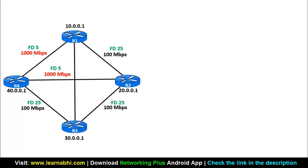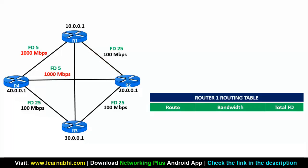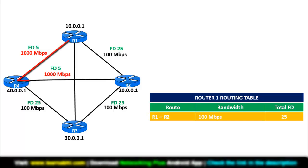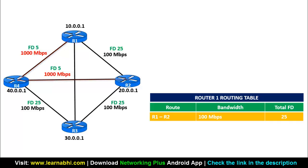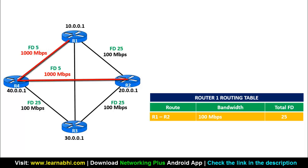The first possible route is Route 1, where Router 1 is directly connected to Router 2 with a link speed of 100 Mbps. The feasible distance for a 100 Mbps link is 25, so the feasible distance of Route 1 is 25. In Route 2, Router 1 forwards packets to Router 4 over a 1000 Mbps link with a feasible distance of 5. Then Router 4 forwards the packets to Router 2, and that link's feasible distance is also 5. So 5 plus 5 equals 10 — the total feasible distance of Route 2 is 10.